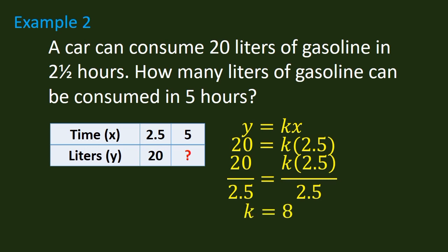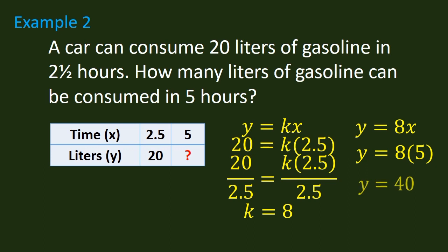We go back to the equation and substitute k by 8, so we have y is equal to 8x. The question is: how many liters of gasoline can be consumed in 5 hours? We use the formula y is equal to 8x, with x equal to 5. So y is equal to 8 times 5, and y is finally equal to 40. This means that the car will consume 40 liters in 5 hours.